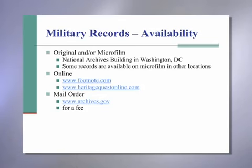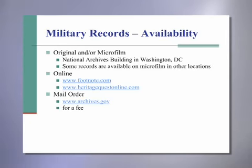Regarding the availability of the records, in addition to the original records, what's available on microfilm — especially for the Register of Enlistments — is also available on Ancestry.com. You can also find some information on Footnote and Heritage Quest, or you can request service information from the regular Army or Navy through a mail-in form available on the National Archives website at www.archives.gov.